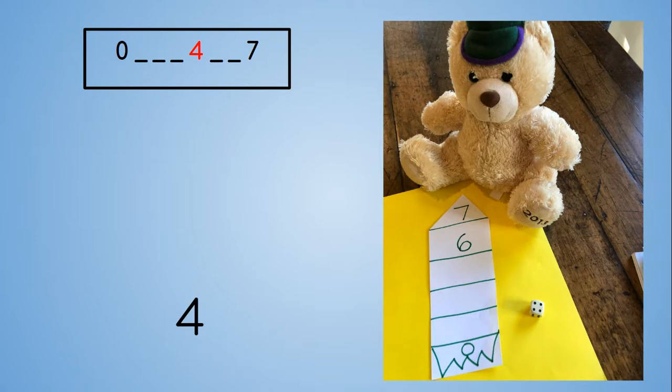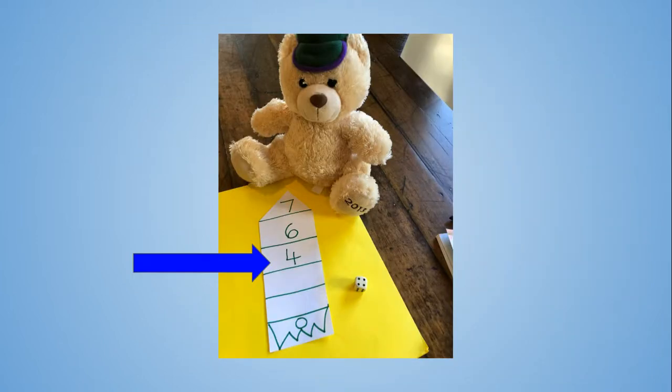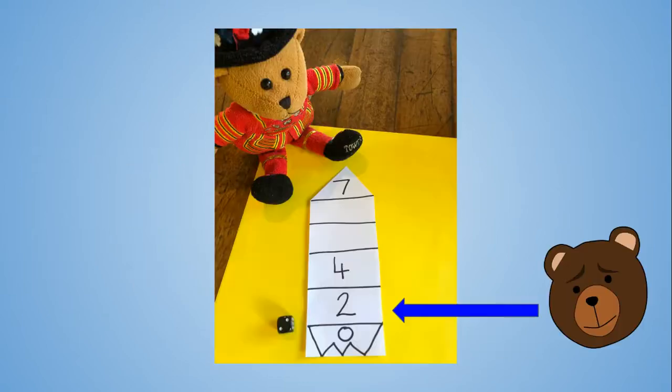Wimbledon Bear's thrown a 4 too. I wonder where he will put it. He's decided to write it right under the 6, so he's still got 2 more spaces to fill in. Ted Bear's just thrown a 2 again. Oh no! He'll have to miss his turn because he's already got 2 on his rocket.